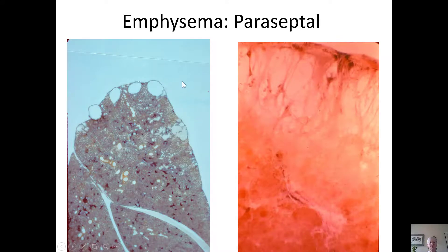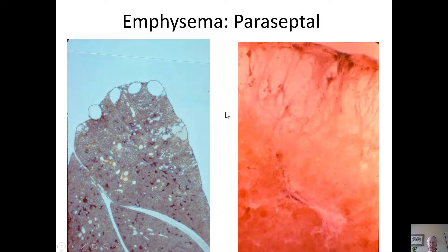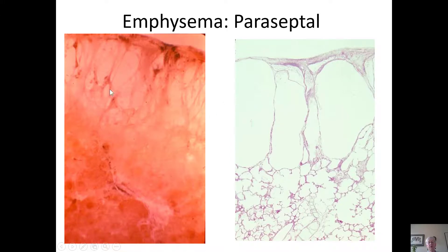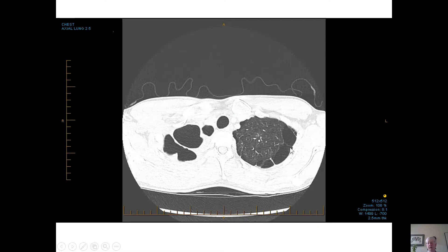Paraseptal emphysema is so-called because the destruction is adjacent to the venous septa or is present in a subpleural position, as seen in this Goff section. This is a surgical lung specimen showing paraseptal emphysema adjacent to the pleural surface with normal lung parenchyma underneath. Pure paraseptal emphysema is characterized by underlying normal lung parenchyma. However, paraseptal emphysema is quite common and is also seen in patients who have centrilobular emphysema. On CT scan, the destruction is seen in a subpleural position with underlying normal lung parenchyma.